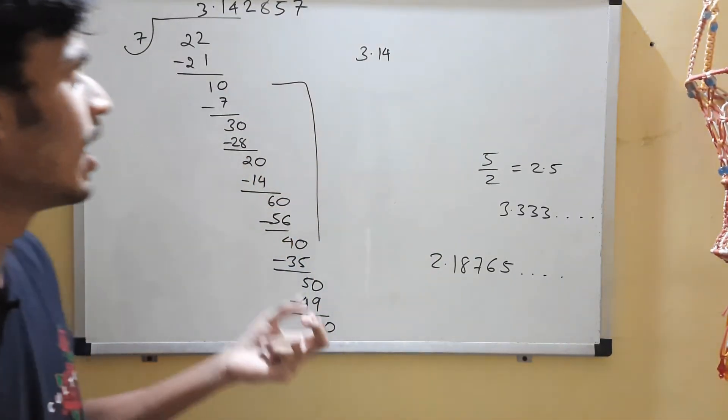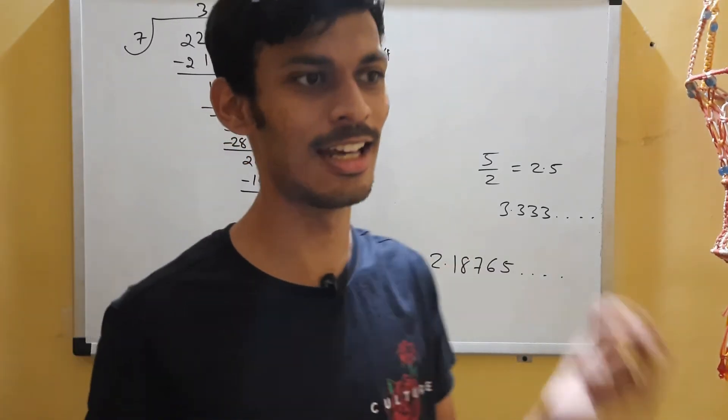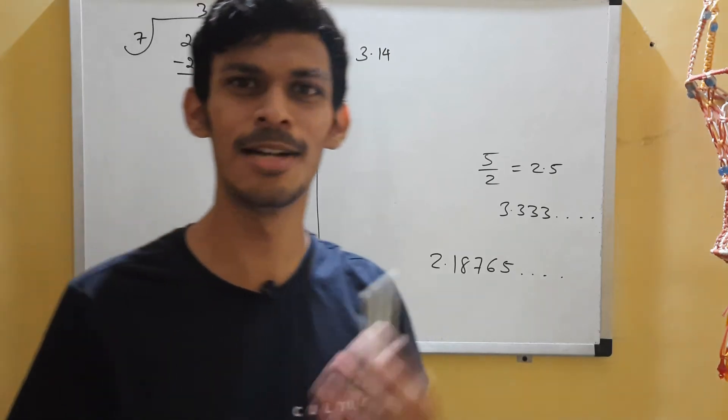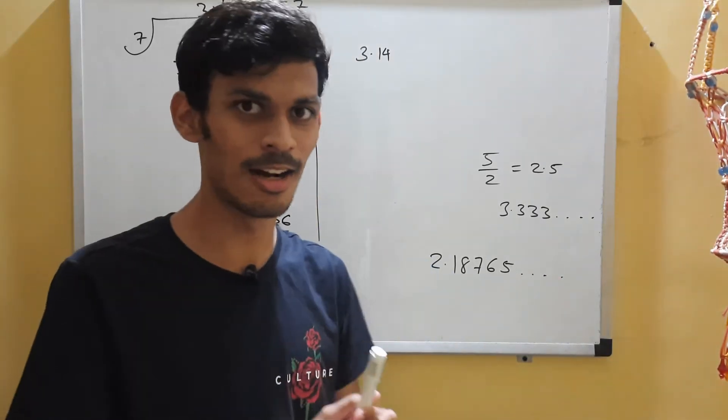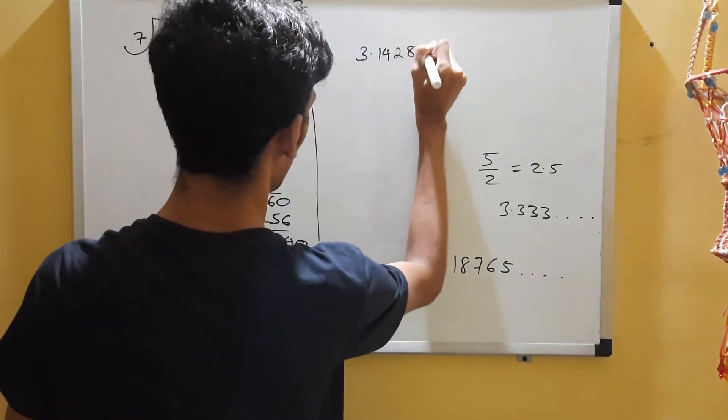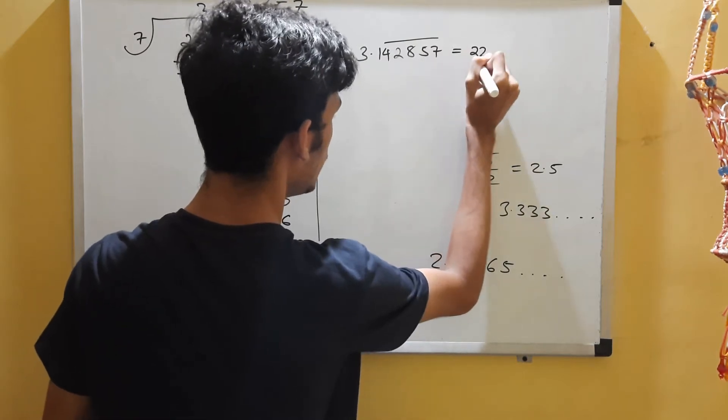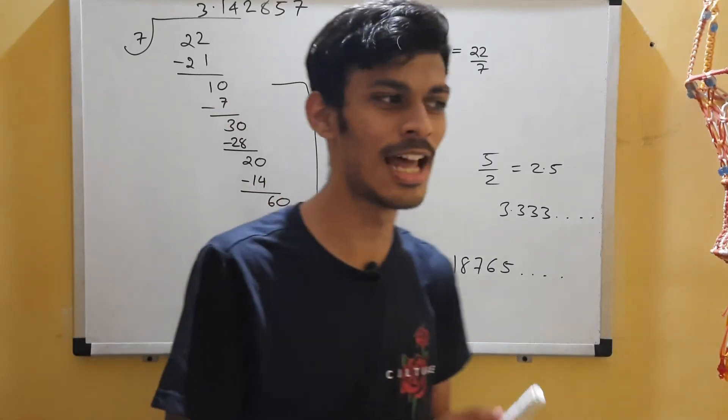This pattern is recurring, somewhat contradictory to our expectation. We expected some random digits to pop out every time, but here we are getting a pattern. These digits are repeating: 1, 4, 2, 8, 5, 7. So 22 by 7 is a recurring fraction, which means that it is rational.